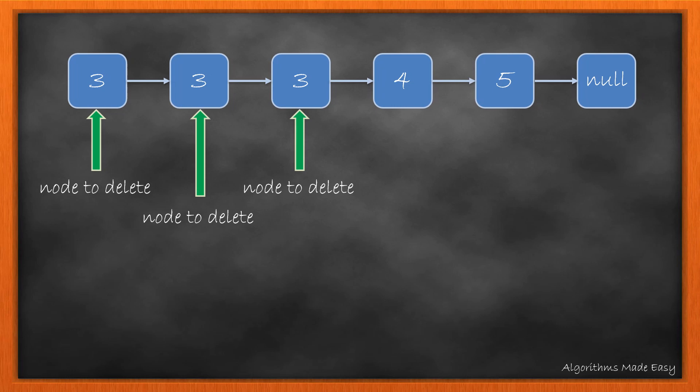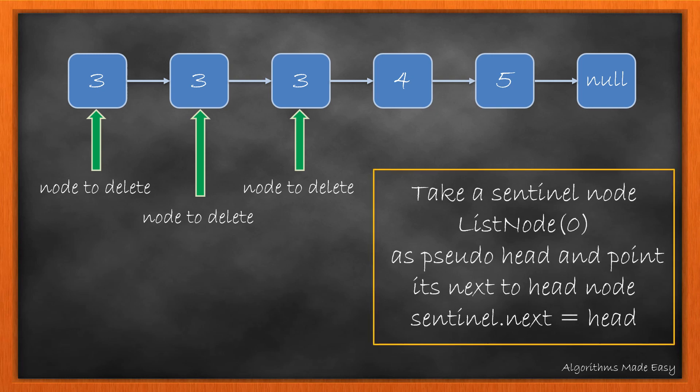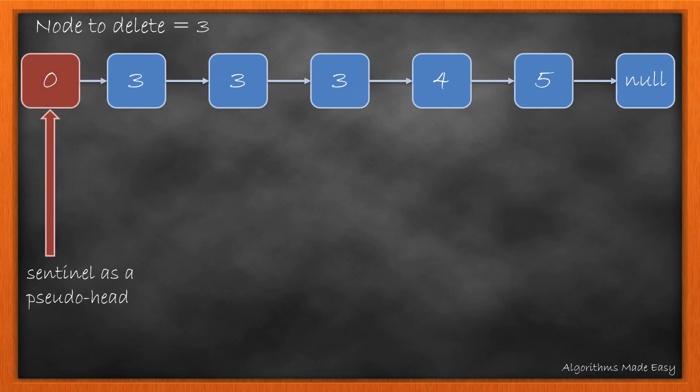Let's take this linked list as an example and try to delete the node with value 3. First and foremost, we will need a sentinel node. We can give it any value. Here, let's give it a value of 0. We will also point its next to the head of the input linked list. Our updated linked list will look like this.